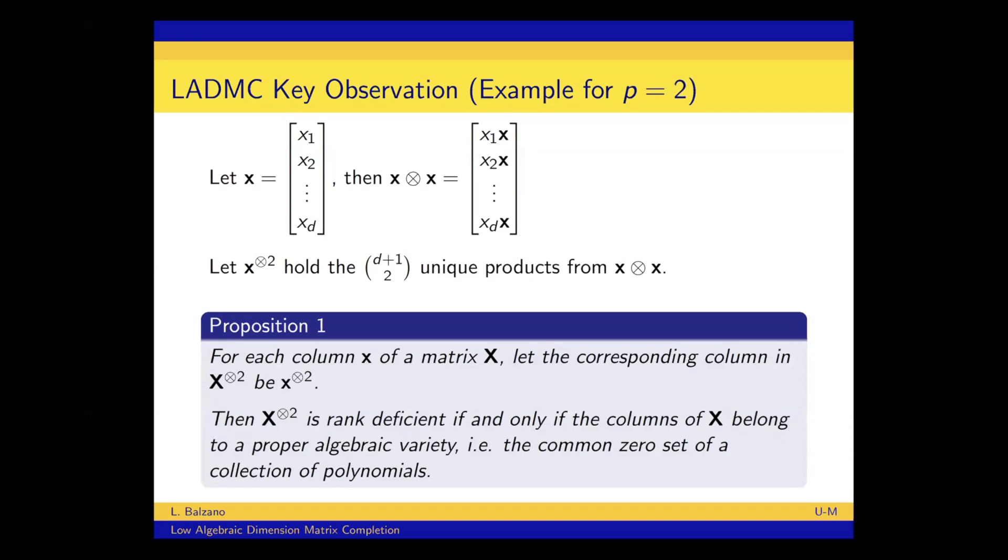So the observation is this, that if we take a new matrix where we take each column and lift it, so we have the same number of columns, but now a lifted matrix in this higher dimensional space, then that lifted matrix is rank deficient if and only if the columns of the original matrix belong to a proper algebraic variety. So and when I say rank deficient here, I mean low rank, linear low rank, what we're used to working with in matrix completion. And I haven't also made any assumption on the polynomial of the algebraic variety that the unknown polynomial, it doesn't have to be degree two, but if it's a proper algebraic variety, meaning it's a strict subset of the whole space, then we'll still have a rank deficient matrix in this lifted matrix. And actually this proposition is true for any lifting, so any power of p. But here and in this talk, I'm just going to focus on p equals two.